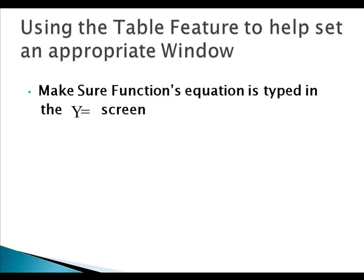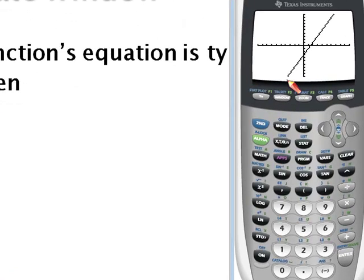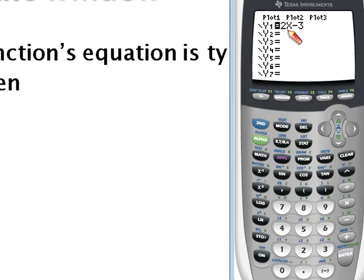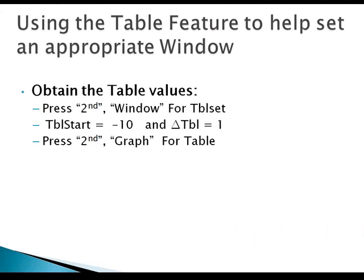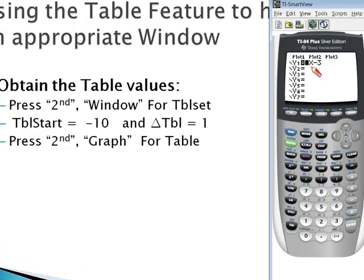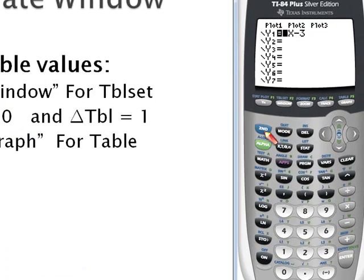First we want to make sure the function's equation is typed in the y equals screen. So I press y equals and there's my function. It's important to note that calculator can only generate a table if it has an equation. Next we're going to obtain the table values. So press the second key, then the window key, which will actually access the purple menu above window, which is table set.